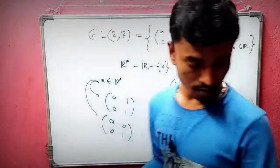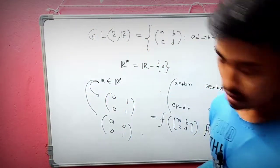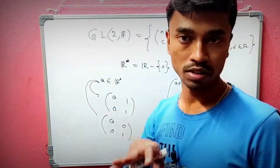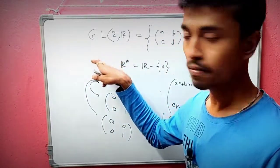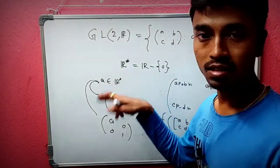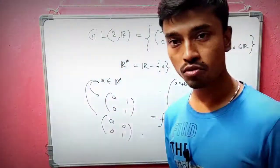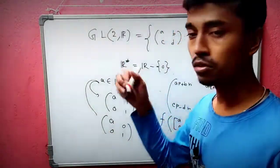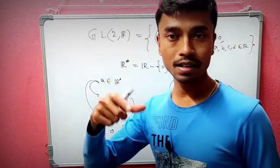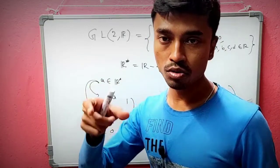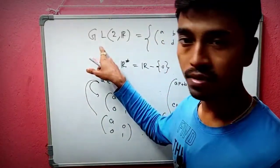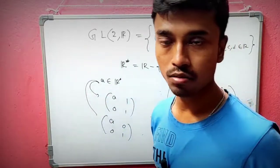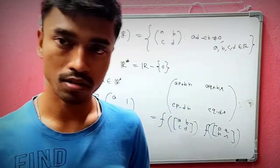In general, GL(2,R) is non-commutative — matrix multiplication does not commute. But R* is commutative, meaning it is abelian. This example beautifully shows how you can find an onto group homomorphism from a non-commutative group to a commutative one. Thanks for watching.